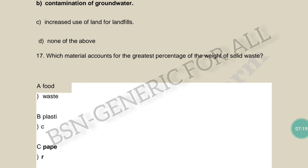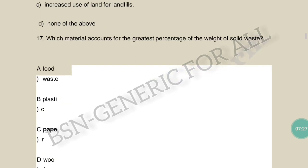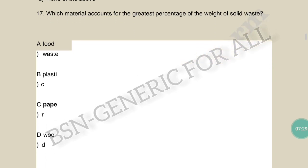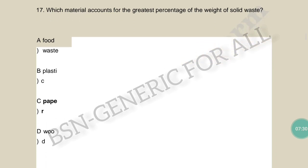Which material accounts for the greatest percentage of the weight of solid waste? Options are food waste, plastic waste, paper waste, or wood. The answer is paper waste — it constitutes the greatest percentage of solid waste by weight.